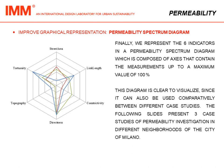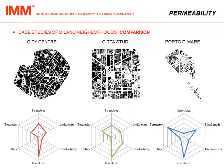The following slides present three case studies of permeability investigation in different neighborhoods of the city of Milano: the city center, an historical part of the city enclosed by the former medieval walls; the Città Studi area, a development of the 20th century; and the Porto di Mare area, a suburban zone in the southeast part of Milan very close to the countryside.